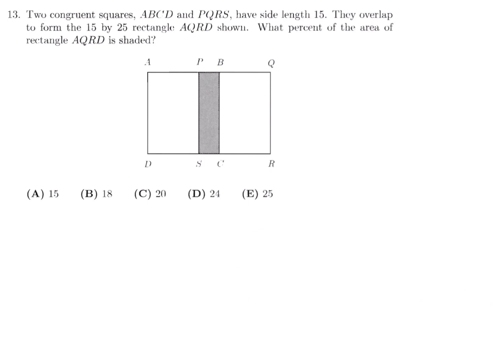Number 13: Two congruent squares ABCD and PQRS with side length 15 overlap to form a 15×25 rectangle AQRD. What percent of the area of rectangle AQRD is shaded? The total length is 25 and the width is 15.